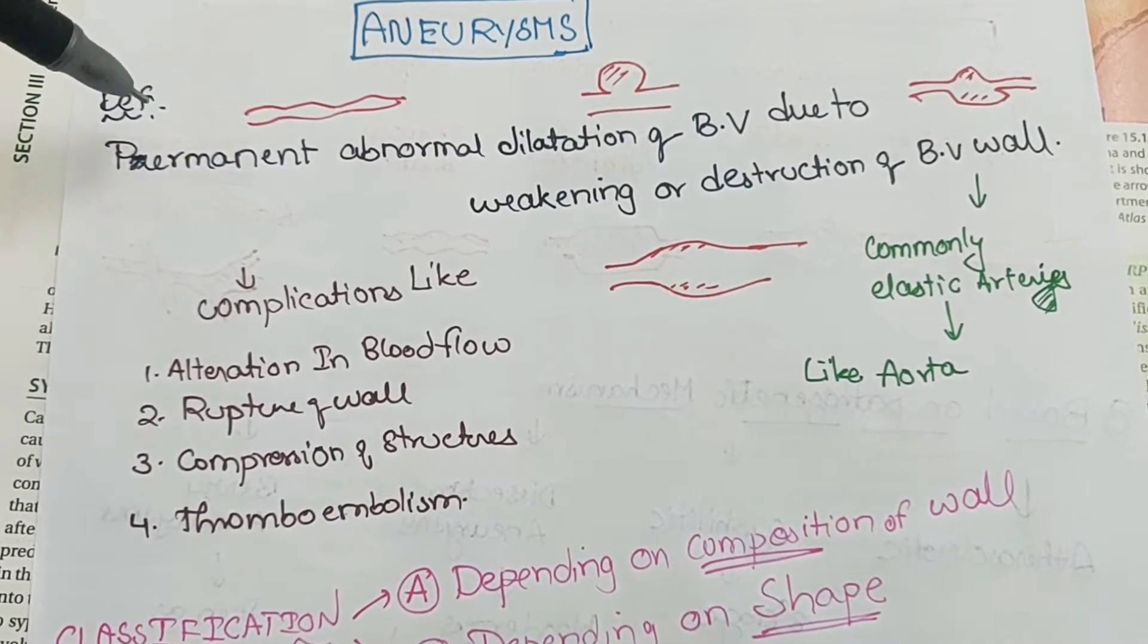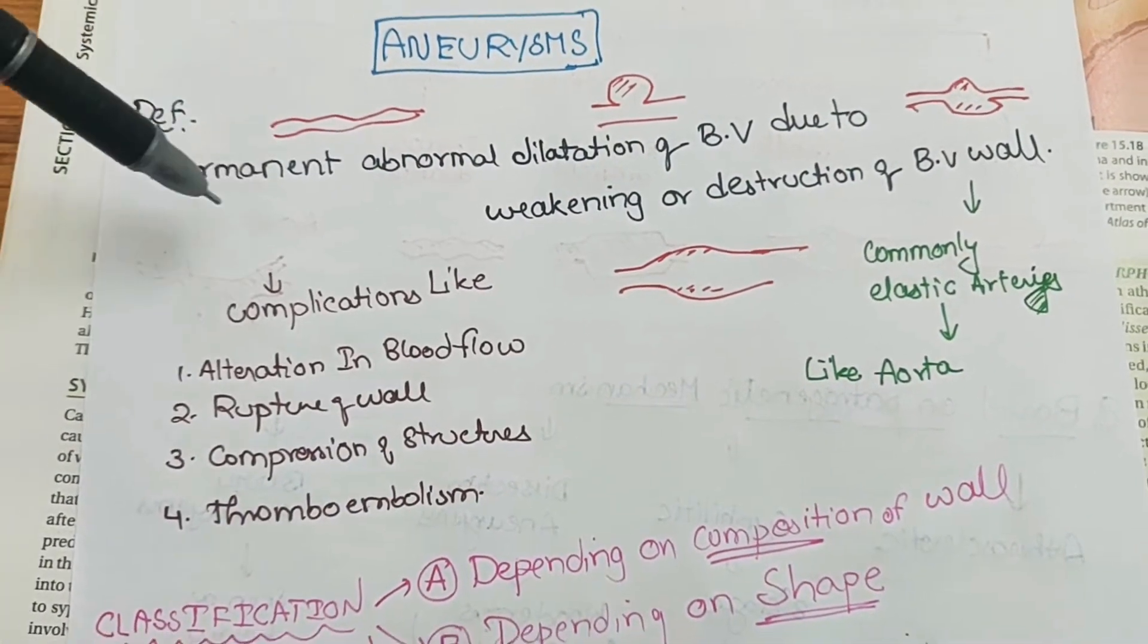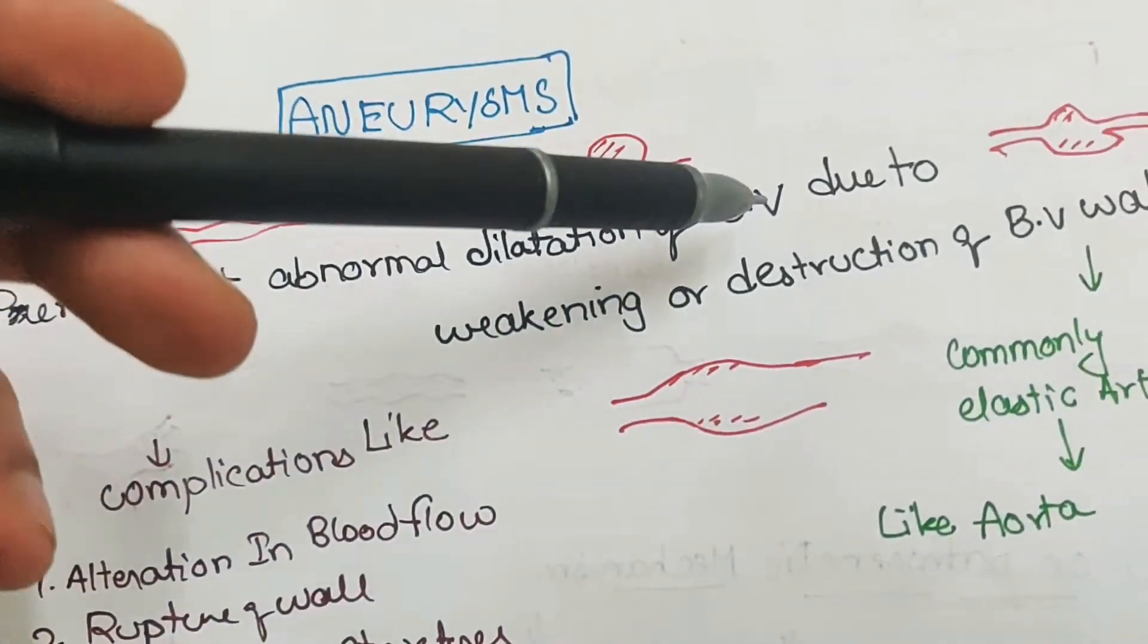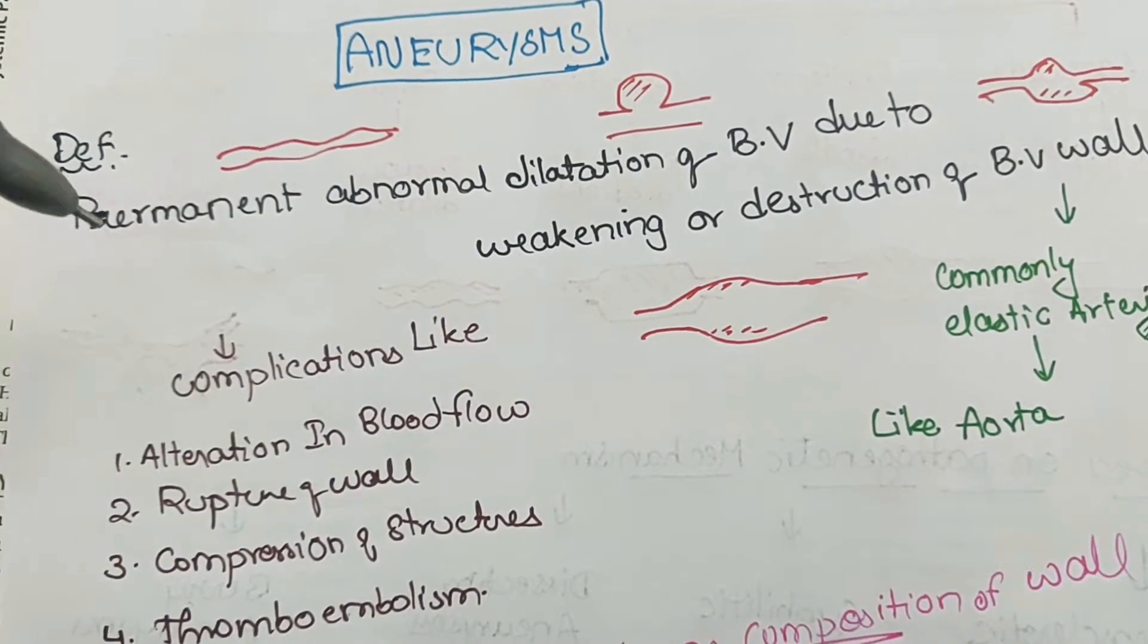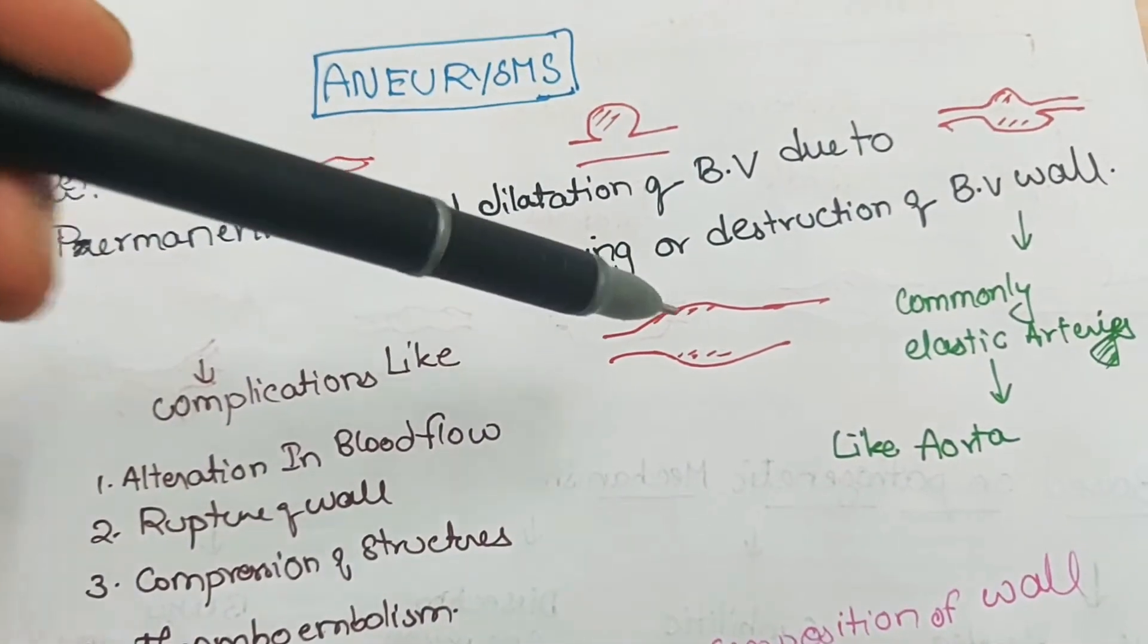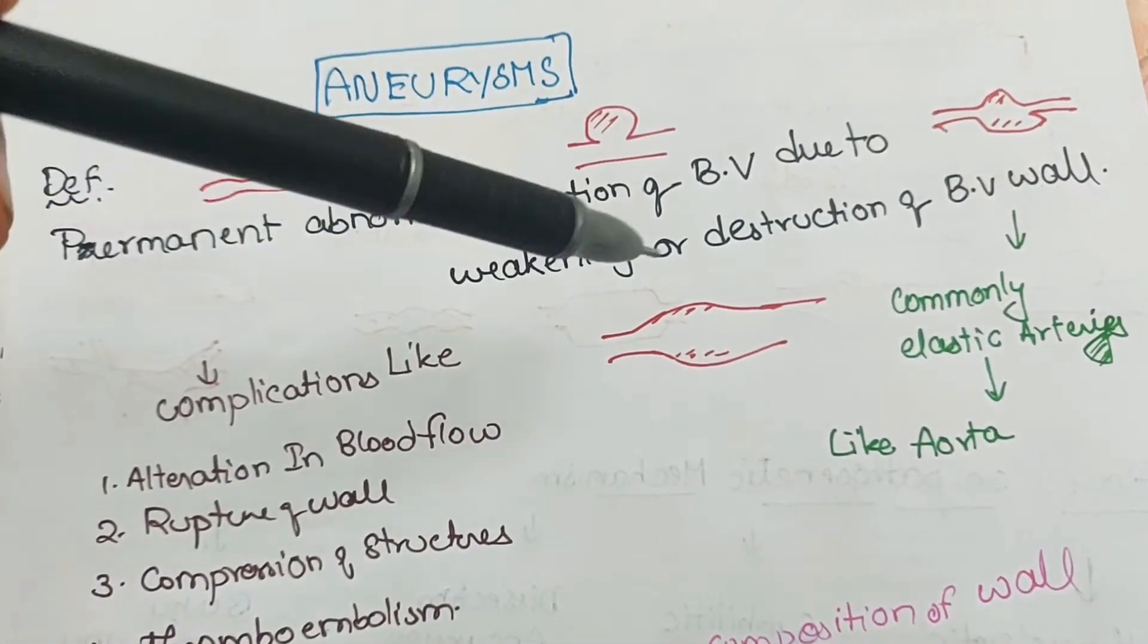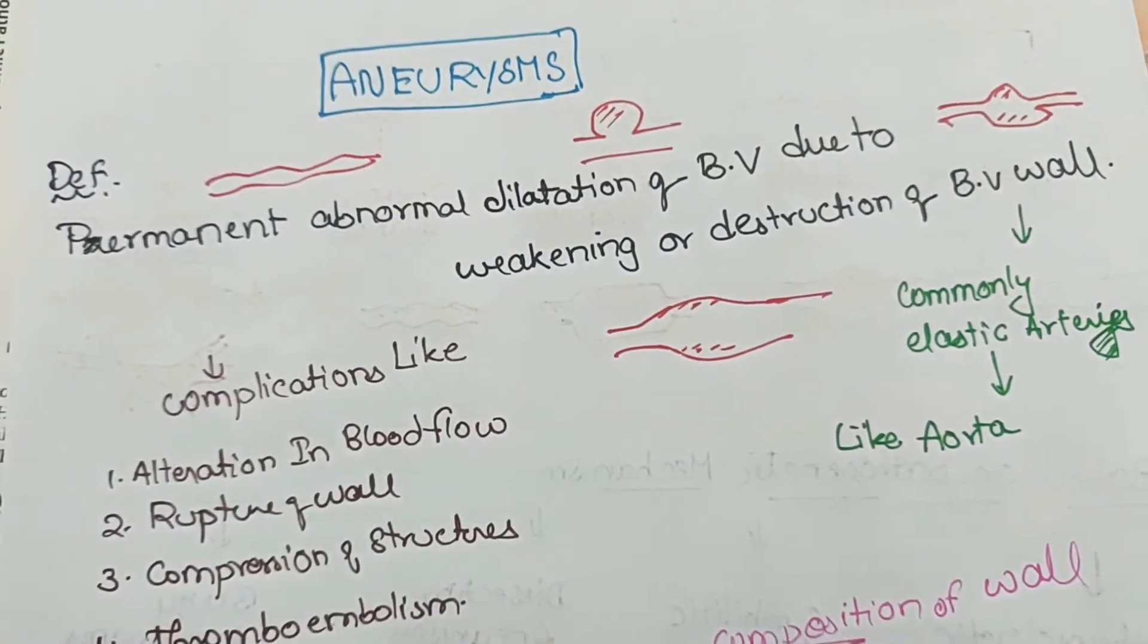The next video is about aneurysms. By definition, it is a permanent abnormal dilatation of the blood vessel due to weakening or destruction of the blood vessel wall. It is nothing but dilatation. There may be different types of dilatation of the blood vessel due to weakening or destruction of the blood vessel wall.